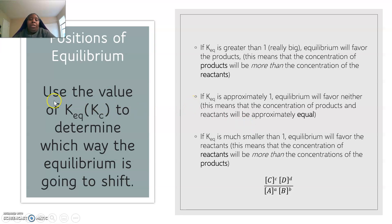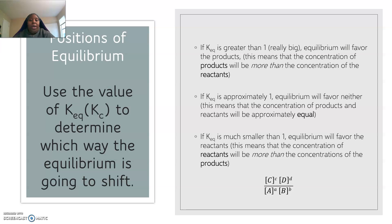When we talk about positions of equilibrium, please remember that you're going to use the value of Keq, also known as Kc — same thing — to determine which way the equilibrium is going to shift. There are three things to keep in mind. The value of your equilibrium constant will tell you which direction the reaction moves. The number we use as a reference is 1.